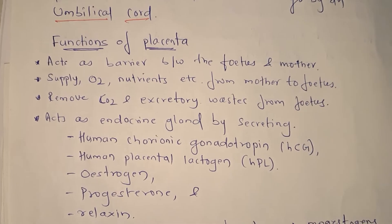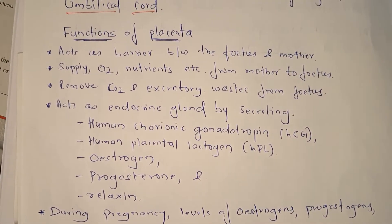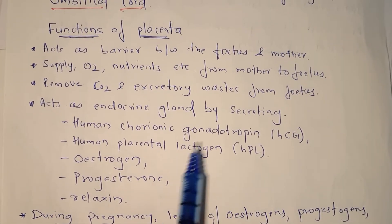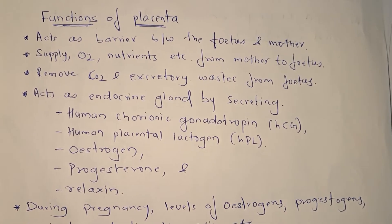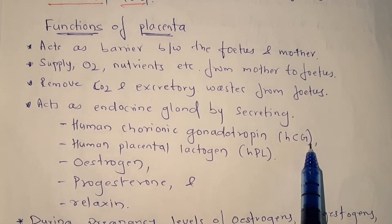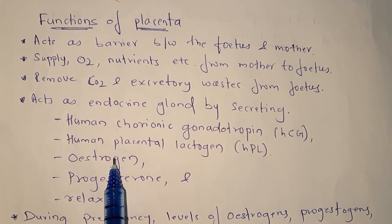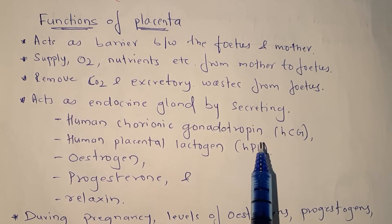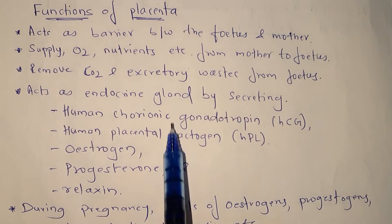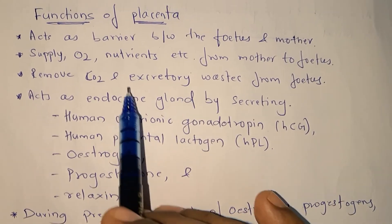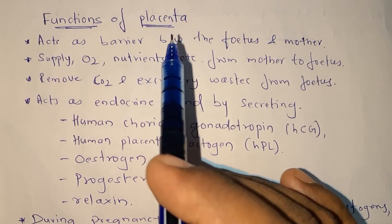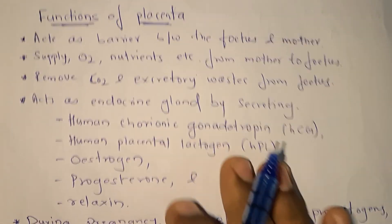Placenta is also considered an endocrine gland because it secretes certain hormones: human chorionic gonadotropin (HCG), human placental lactogen (HPL), estrogen, progesterone, and relaxin. Because of this hormone secretion, placenta is considered an endocrine gland.